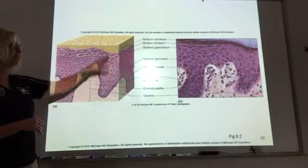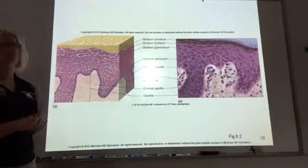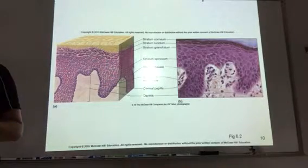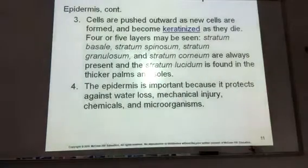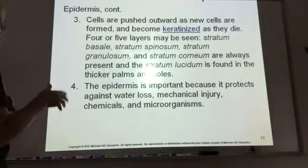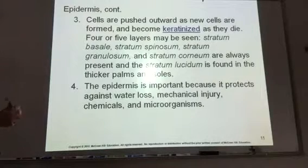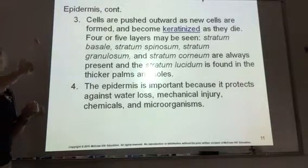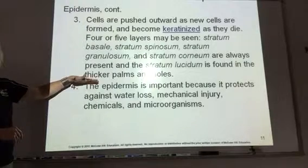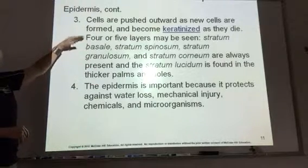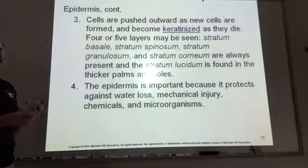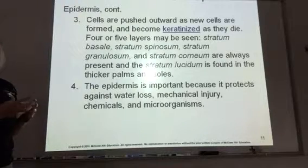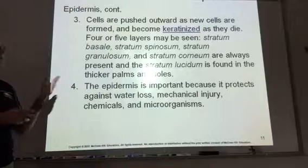Here again is another diagram. You should know these layers and know the order they go in. Cell reproduction takes place at the bottom. As new cells are produced, they push outward — they start down at the base and move up until they reach that outer layer. As they move up, they keratinize, meaning they produce keratin, and they die.